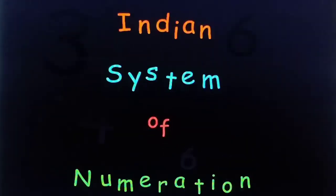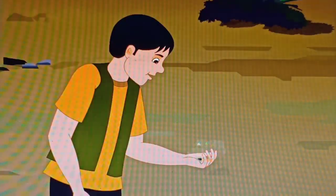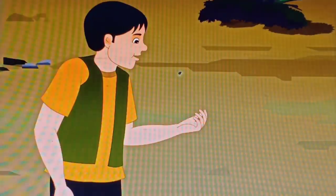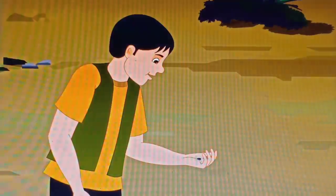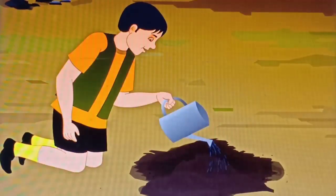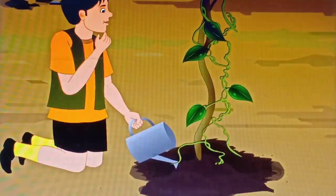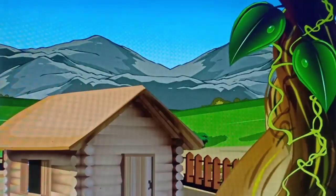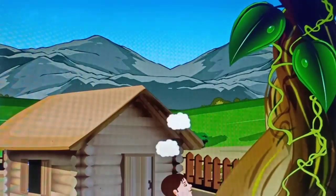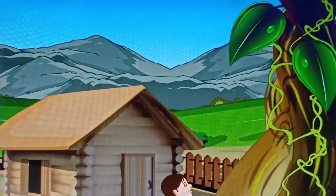Indian System of Numeration. David has a magical seed with him. He sows that seed in his garden. As soon as he waters it, he finds that the seed starts growing into a climber. After a few minutes, it grows so tall that David is unable to see its tip. David is anxious to see its tip.